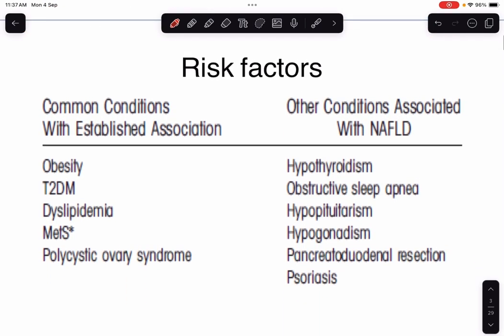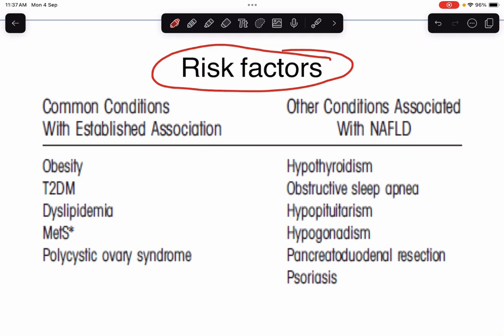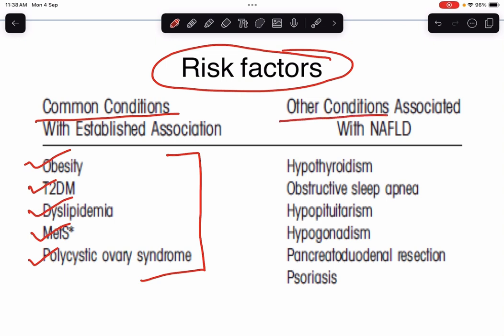Let's see the risk factors for development of NASH. There are certain common conditions with established association with NAFLD like obesity, type 2 diabetes, dyslipidemia, metabolic syndrome, and polycystic ovarian syndrome. Other less common conditions associated with NAFLD are hypothyroidism, obstructive sleep apnea, hypopituitarism, hypogonadism, pancreatic duodenal resection, and psoriasis.